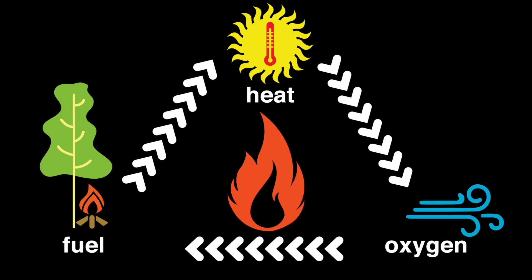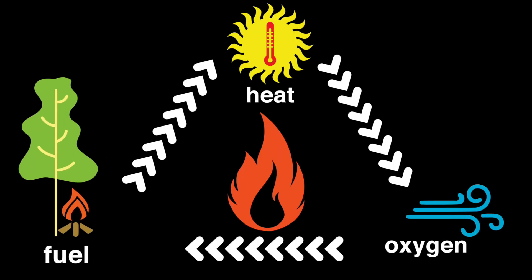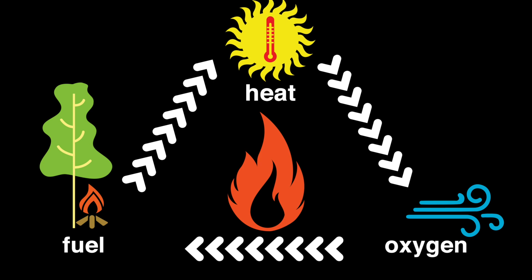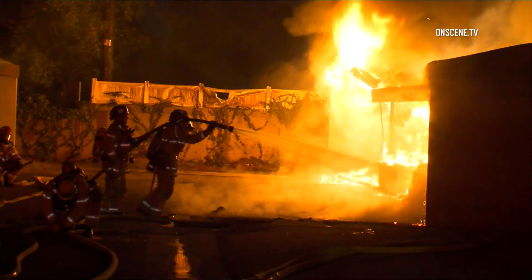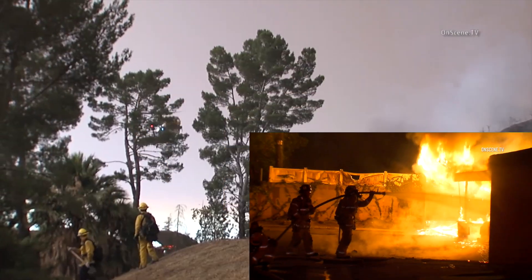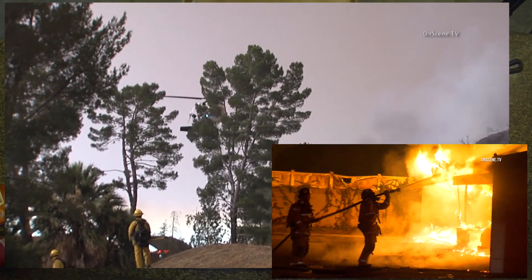So remember, the fire triangle is made up of three elements: fuel, heat, and oxygen. Remove any one of them, and fire can no longer burn.